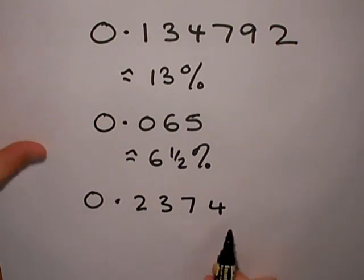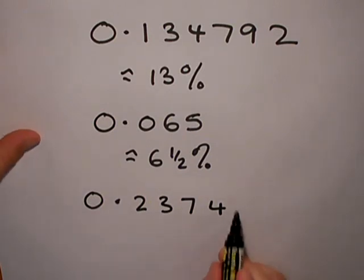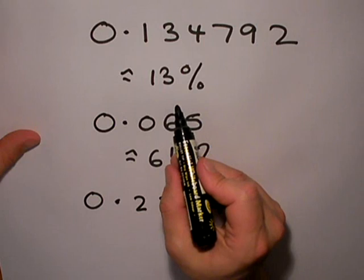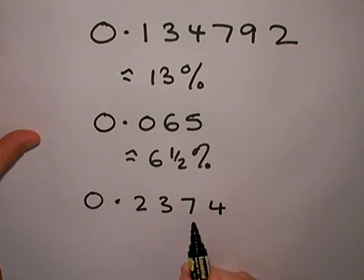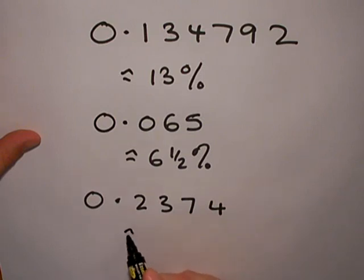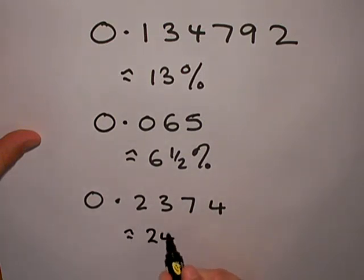If we wanted to round it off to the nearest percent, like we did here with 13%, we could say 0.2374 is 23%, but we'd have to look at the next digit. Because that digit is more than five, or five or more, then we ought to round up, and so this is approximately equal to 24%.